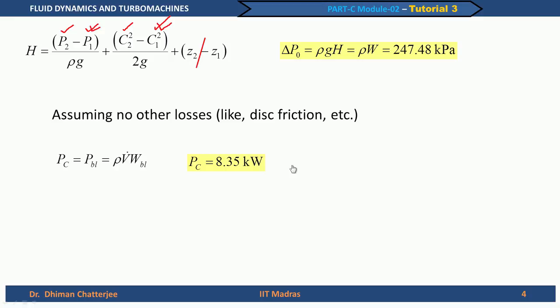In summary for problem 1, we used velocity triangles and the concept of hydraulic efficiency to find the volume flow rate, stagnation pressure rise, and coupling power. If a slip factor had been given, WBL would be related to WBL infinity by that slip term. In this problem the slip factor is taken as 1.